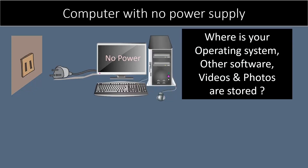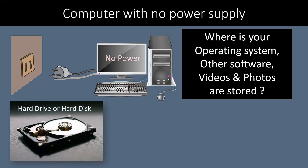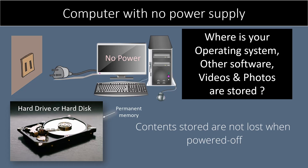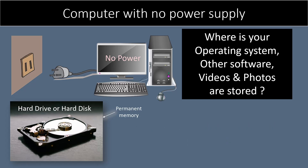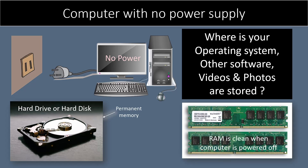You are correct if you think it is stored in the hard drive or hard disk. Your hard disk or secondary memory is permanent in nature — the contents stored in the hard disk remain intact even if power is off, whereas primary memory like RAM is clean and has nothing stored during the power off mode.